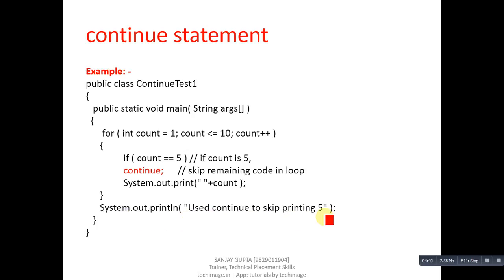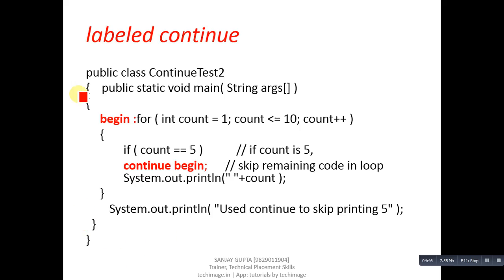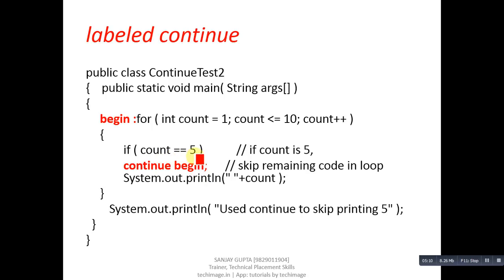Similar to labeled break, we have labeled continue. We can use a label with the continue statement. With this for loop, I have used a begin label enclosed in curly braces. Inside the if block, the continue keyword is used with the label. So this continue will transfer control to where the begin label is written. If count equals 5, control automatically transfers to the begin label. We can also use nested labels with labeled continue, similar to labeled break.